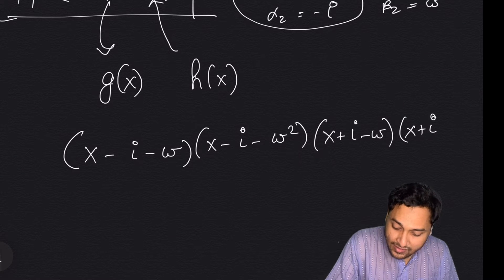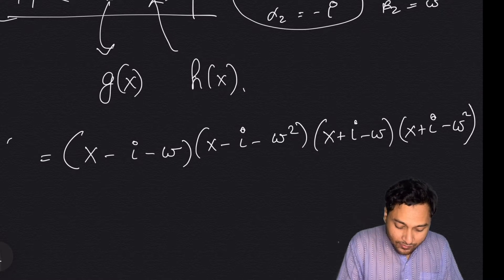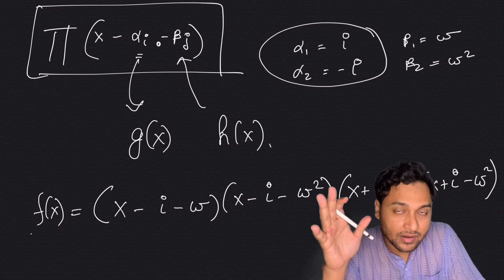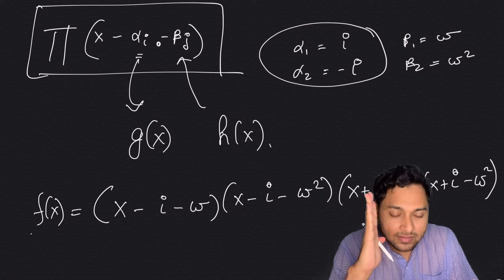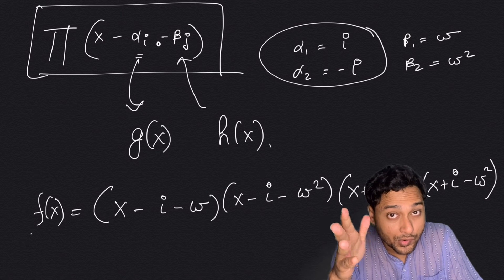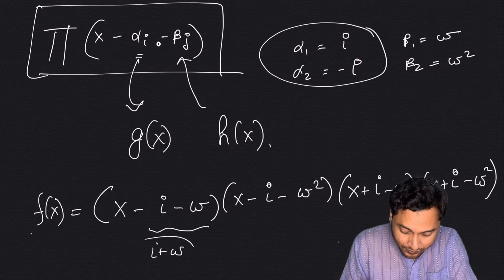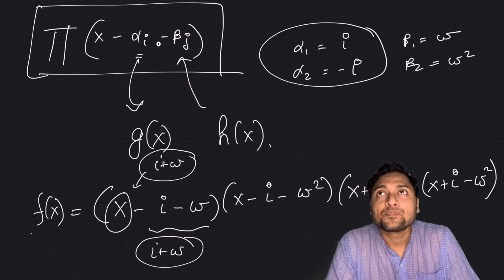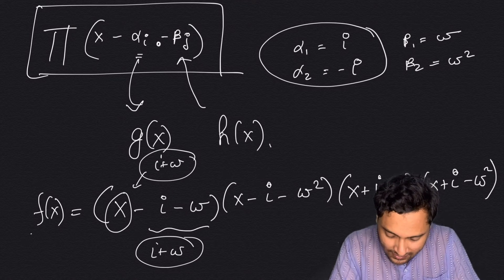...and (x + i − omega) and (x + i − omega²). You take the product of all four factors, and whatever this function is — when you multiply it out completely — you will get the final polynomial with integer coefficients. Try to pause and compute this, and tell me in the comments what polynomial you get. This polynomial will have i + omega as a root: if you plug in x = i + omega, it becomes zero.